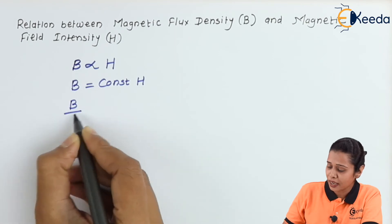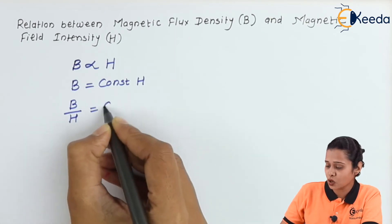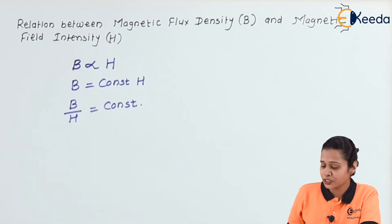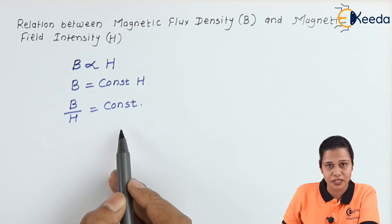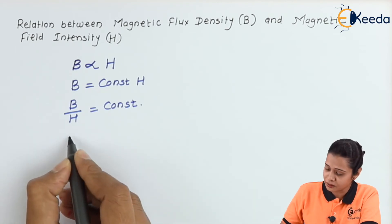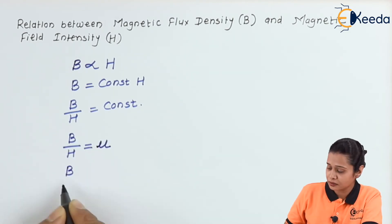Hence, we will write B by H is equal to constant. Means the ratio of magnetic flux density to magnetic field intensity remains constant. And constant value is here. Here we can write.